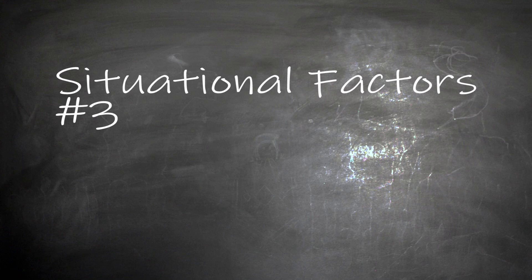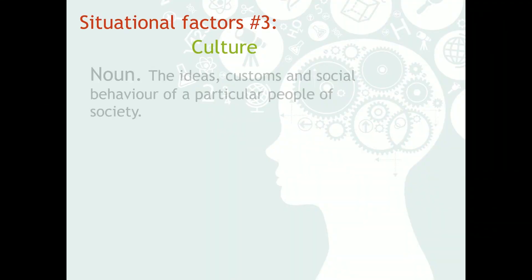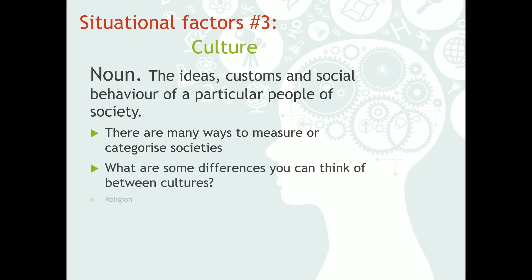I've fixed the scratchy mic problem from the last video, but my kids are all home running around, so there's probably still going to be some random noises. So the third of the situational factors that you need to know about is culture. Culture describes the ideas, the customs, and the normal social behaviour of a particular people. Culture operates on lots of different levels — there are cultural things common across groups of countries, and cultural things different even within people living in the same town. We have these little microcultures. There are lots of different ways to describe these different cultures and lots of different behaviours which culture affects.